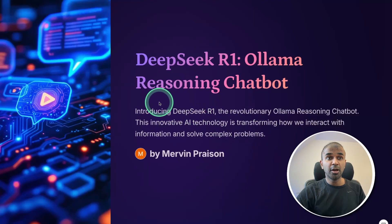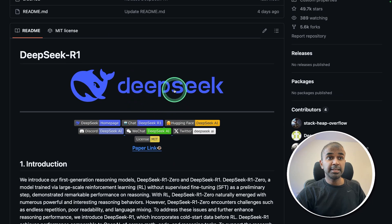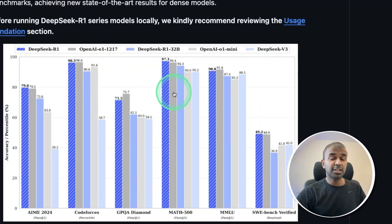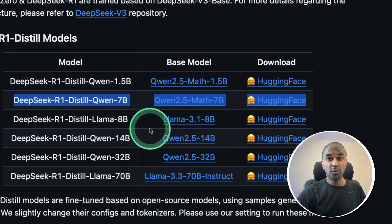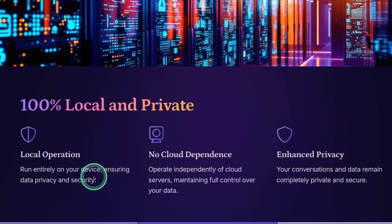DeepSeek R1 Ollama Reasoning Chatbot. You are able to create a chatbot completely for free, and you can run this model locally on your computer. DeepSeek R1 is one of the most powerful large language models right now. We are going to use the distilled version from Ollama, where you can download this AI model for free to complete complex tasks, write essays, rewrite your emails, and much more. It's going to be 100% local and private, run entirely on your device, with no cloud dependency and enhanced privacy.